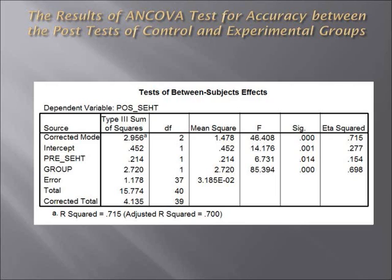The ANCOVA test for accuracy between the post-test of control and experimental groups showed F equal to 85.39 and P equal to 0.0. In other words, the difference between the adjusted means in the post-test of the two groups is significant, and the magnitude of this difference is high. Eta squared is equal to 69.8%.